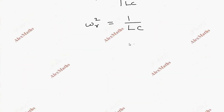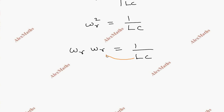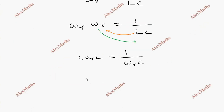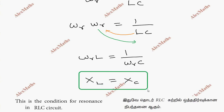omega r squared equals 1 by LC. Multiplying both sides: omega r into L equals 1 by omega r into C. This gives us inductive reactance XL equal to capacitive reactance XC. This is the condition for resonance in an RLC circuit.